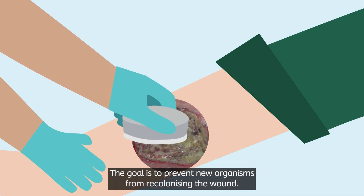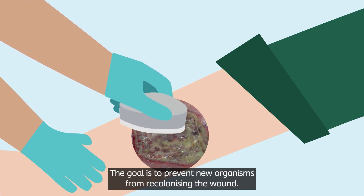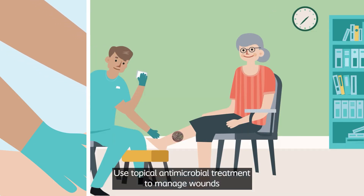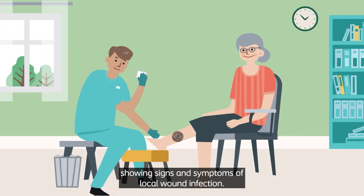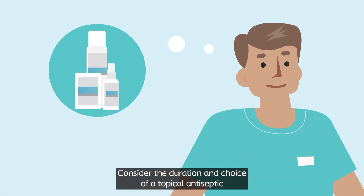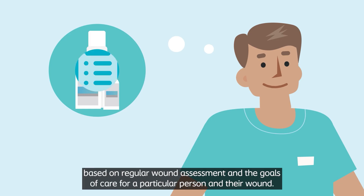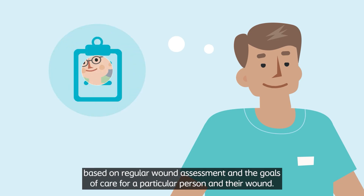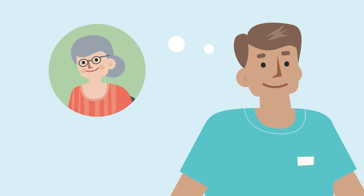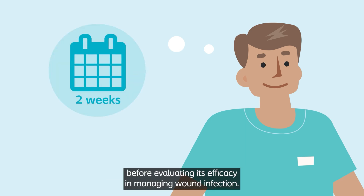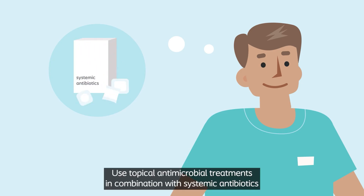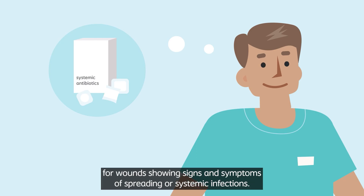The goal is to prevent new organisms from recolonizing the wound. Use topical antimicrobial treatment to manage wounds showing signs and symptoms of local wound infection. Consider the duration and choice of a topical antiseptic based on regular wound assessment and the goals of care for the particular person and their wound. At least two weeks are recommended before evaluating its efficacy. Use topical antimicrobial treatments in combination with systemic antibiotics for wounds showing signs and symptoms of spreading or systemic infections.